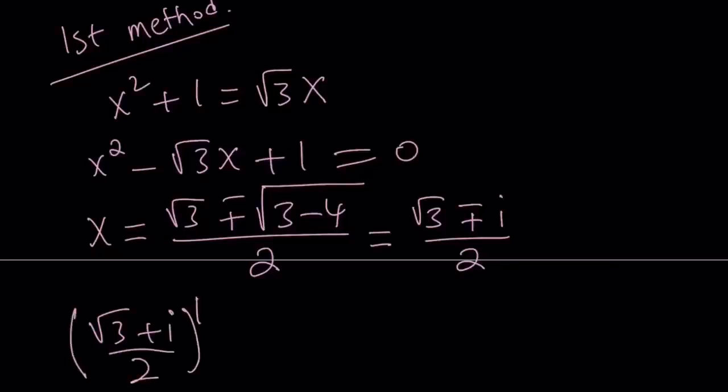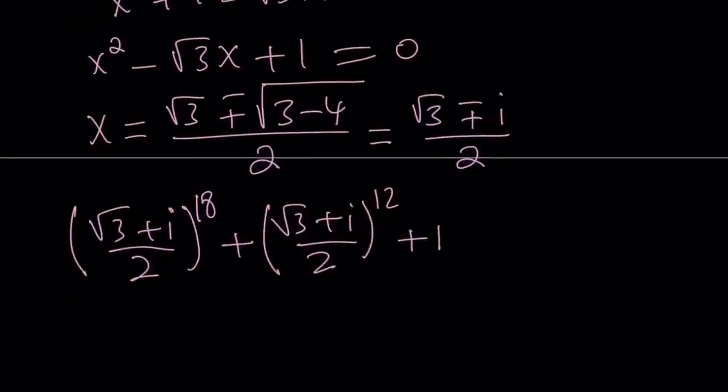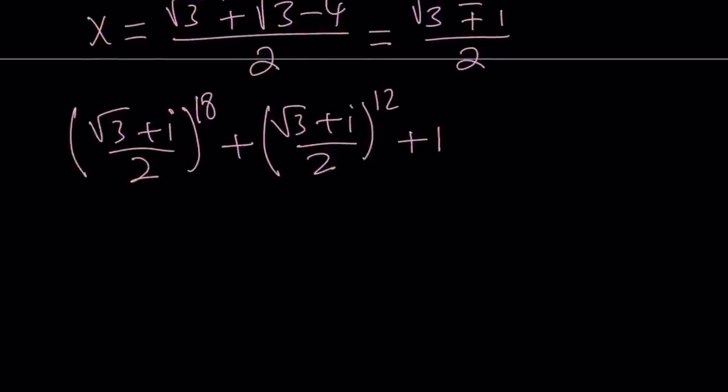Let's go ahead and plug it in and see what happens. Let's just use the positive, let's keep it positive. Take this and raise it to the 18th power, and then the same number, raise it to the 12th power, and then just add 1. So that's what we're looking for, but guess what? Does anybody want to raise this gigantic expression? Do you want to raise this to the 18th power? I don't think so. So let's do something else, and that's called the polar form, because these are complex numbers.